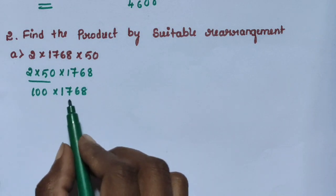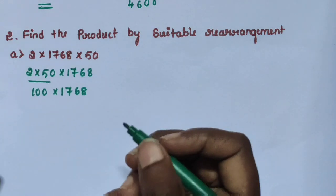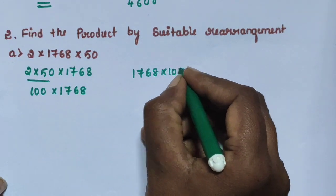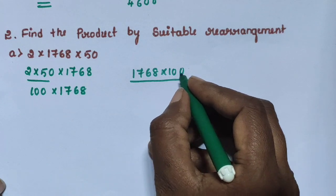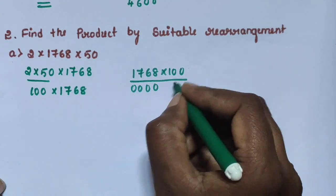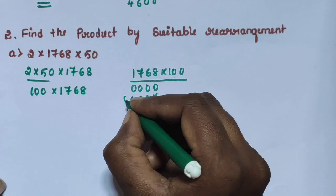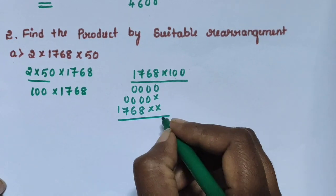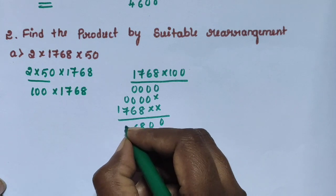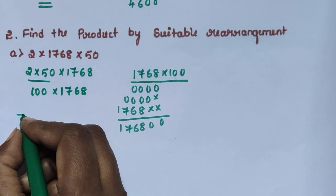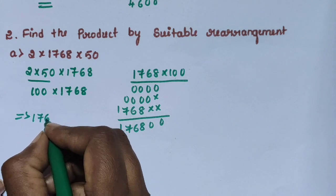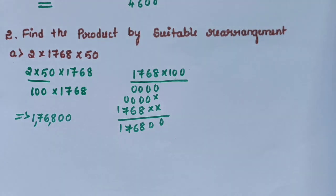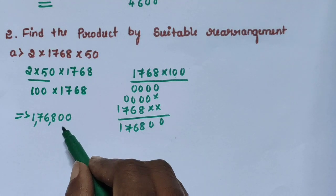Multiply 1768 into 100. When multiplying by 100, append two zeros: 1768 becomes 176800. The answer is 176800.